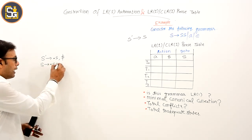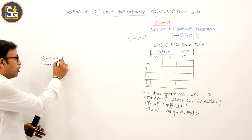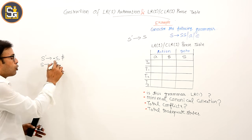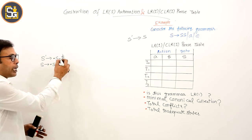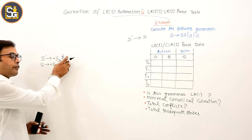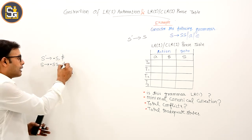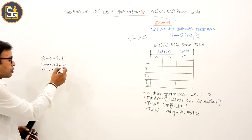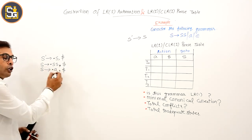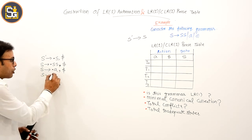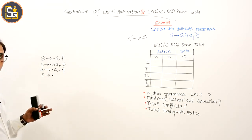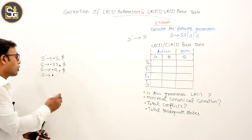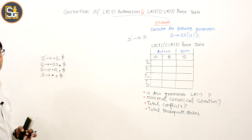तो S derives dot SS, comma — और चूंकि आप इस S का closure लिख रहे हो, तो इसके बाद जो भी grammar symbol है उसका first लेंगे. सिर्फ dollar है, तो dollar का first लिखोगे. S derives दूसरा production, उसमें भी dollar आएगा. और S derives epsilon का LR0 item S derives dot, उसके लिए भी dollar आएगा.